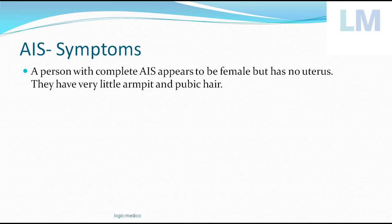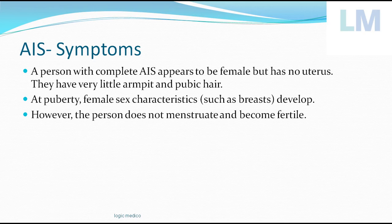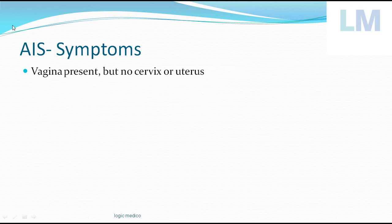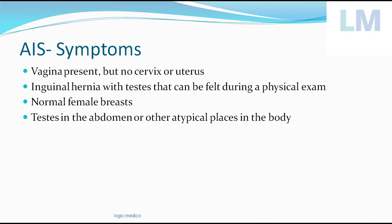In complete AIS, the individual appears entirely female but has only a vagina — no uterus or ovaries. They have very little body hair, even in the armpit and pubic area, because testosterone and dihydrotestosterone cannot act due to receptor resistance. At puberty, female sexual characteristics appear: the breast and nipple start growing. These persons do not menstruate because there is no uterus. The vagina is present but there is no cervix or uterus. An inguinal hernia containing testes may be present in the groin area. The testes are usually found within the abdominal cavity or the inguinal area.